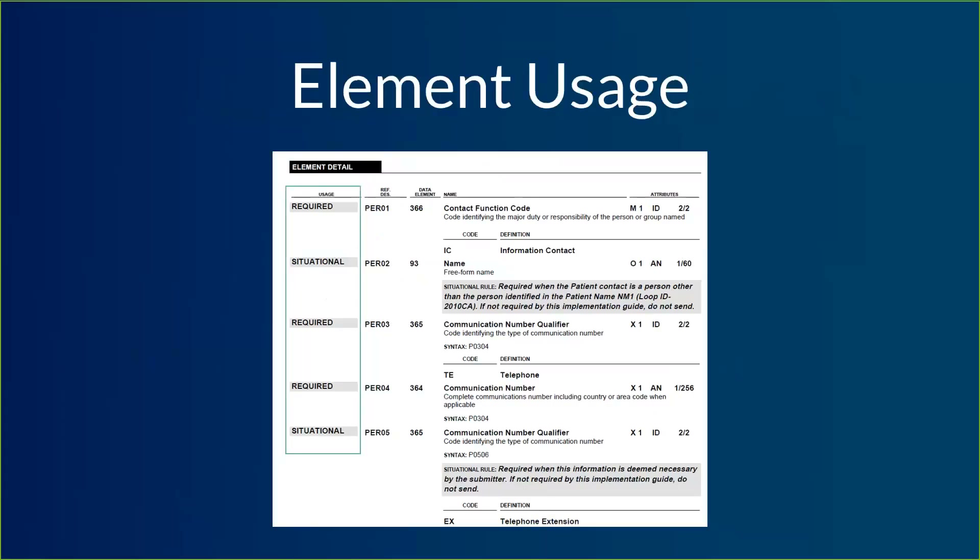I actually have a real life example of this. Fairly recently I was helping someone troubleshoot a new system, and their system was sending in a segment for other provider information. They started the segment — they had the NM1, they had the qualifier — but the name and ID fields were blank, and those are required. When we were looking at solutions, I told them they had two options: they could either finish the segment with the missing information, or they could remove the segment altogether since it was situational and they didn't meet the criteria to have to send it. They just couldn't send it in half-finished.